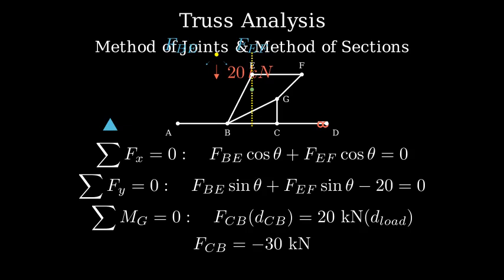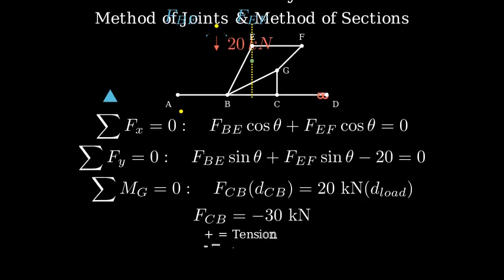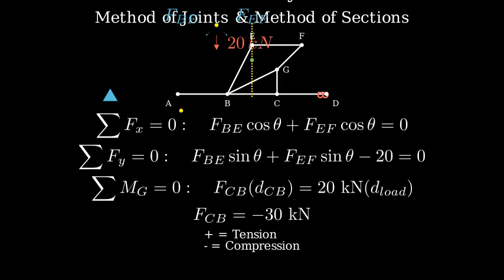Finally, let's analyze joint B. We now know the force in CB, and we can find the forces in members BF, BG, and AB using force equilibrium equations. Remember, a positive force indicates tension, while a negative force indicates compression.